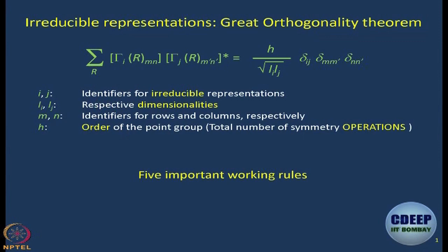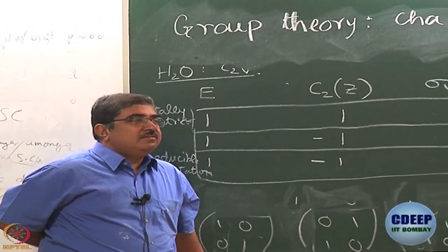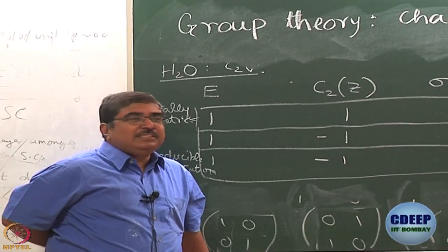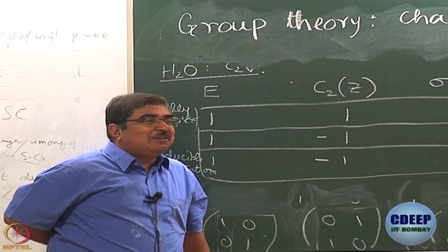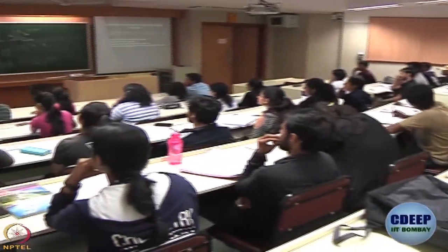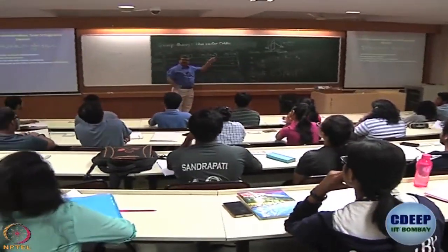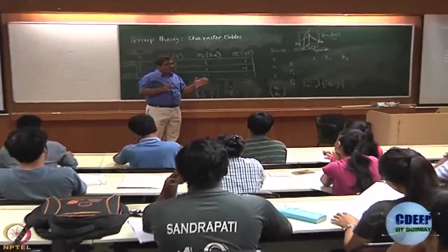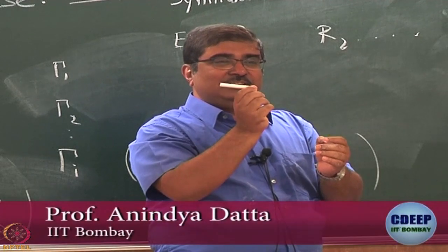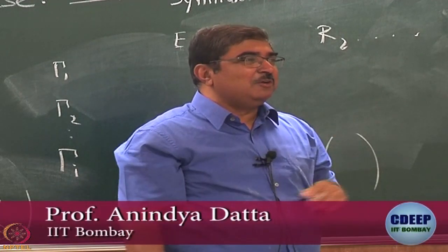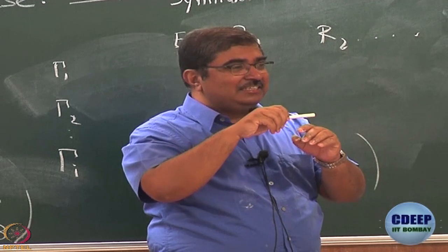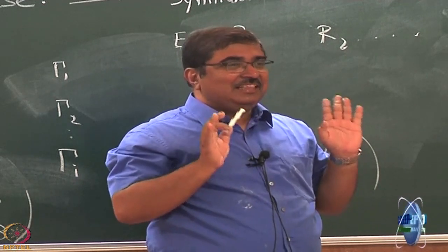The right-hand side has H divided by the square root of L_i × L_j, where L_i and L_j are the dimensionalities of the i-th and j-th irreducible representations. H is called the order of the group — for our purpose it means the total number of symmetry operations, not symmetry elements. In C2V, the total number of symmetry operations is 4: E, C2, σ_v, and σ_v'.